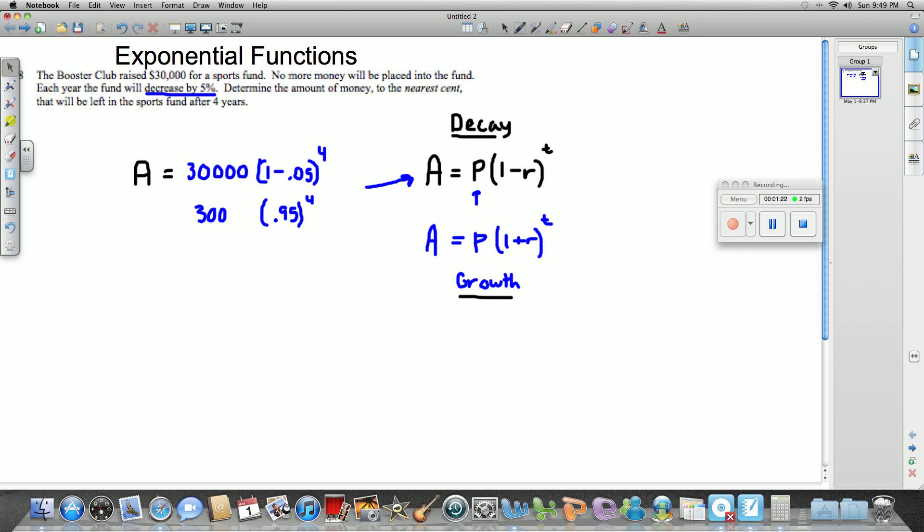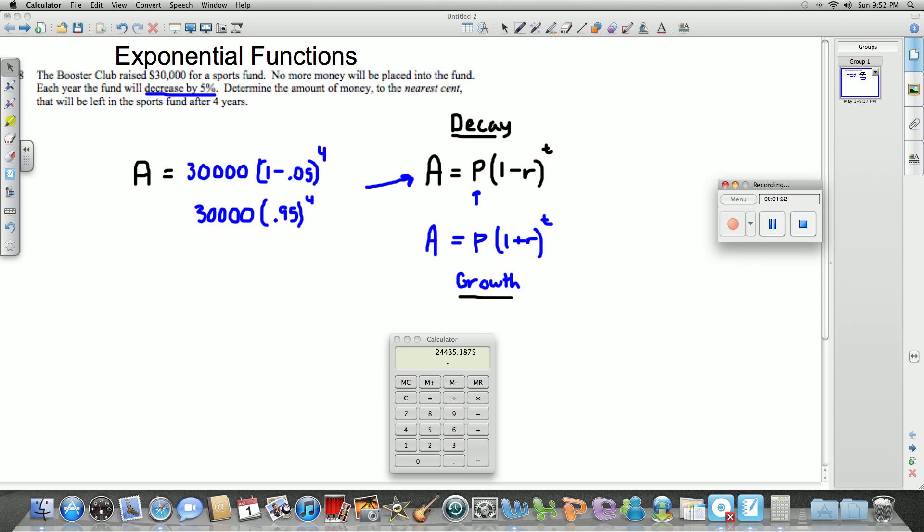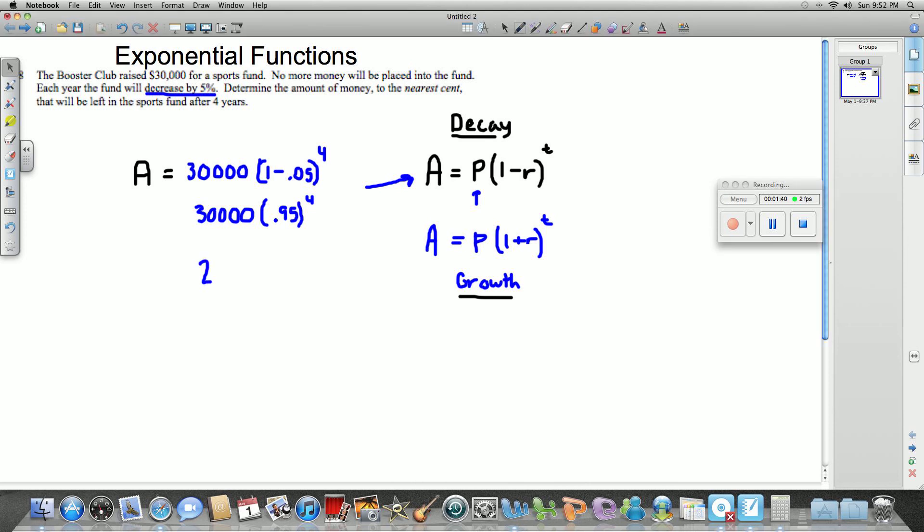So we've got to take care of the exponent first, and then multiply it by the 30,000. So for a final answer, I went ahead and did my calculations on my calculator and ended up getting an answer of $24,435.